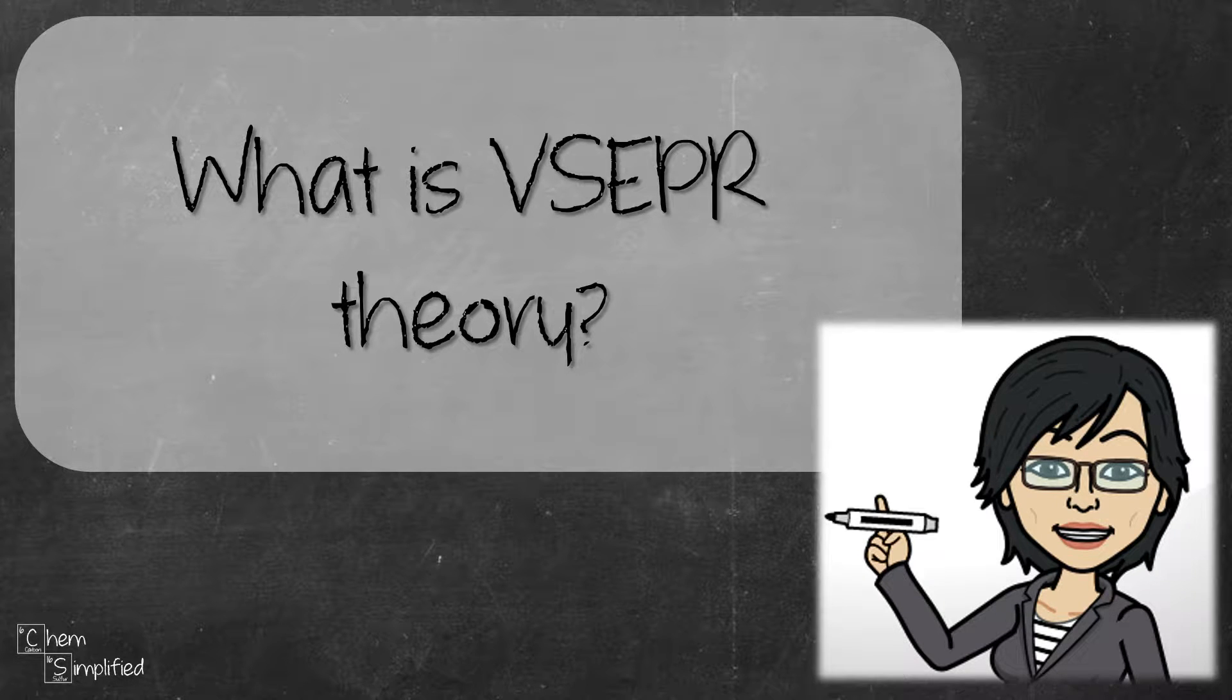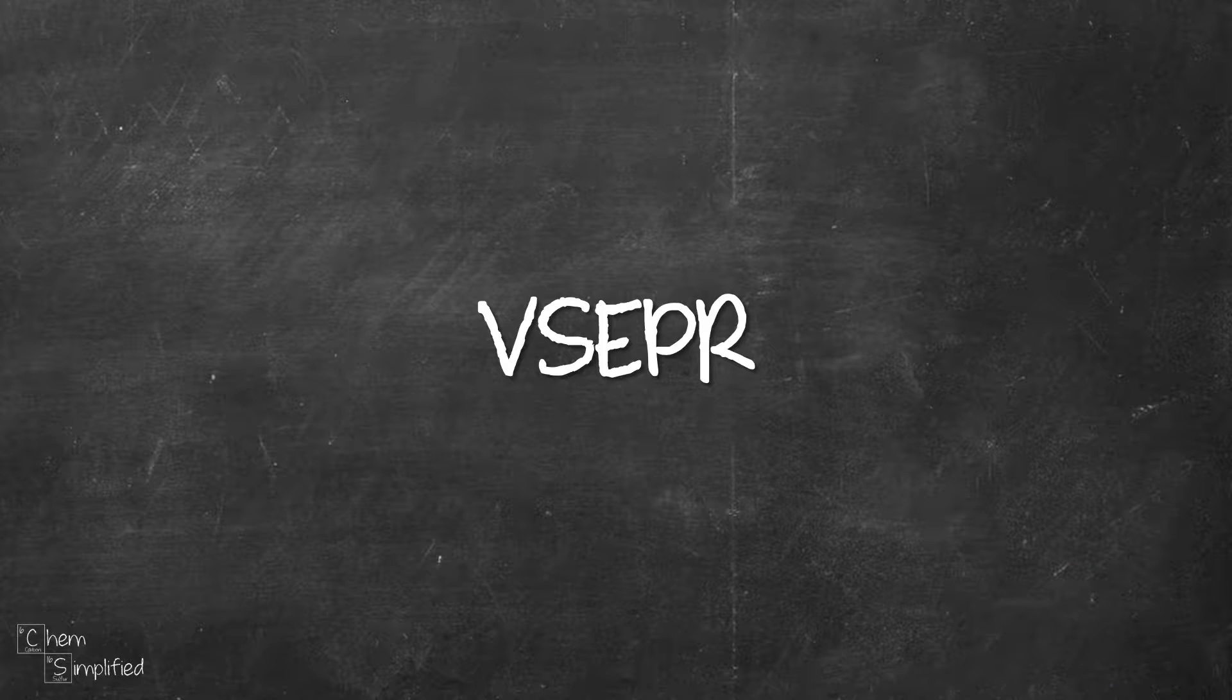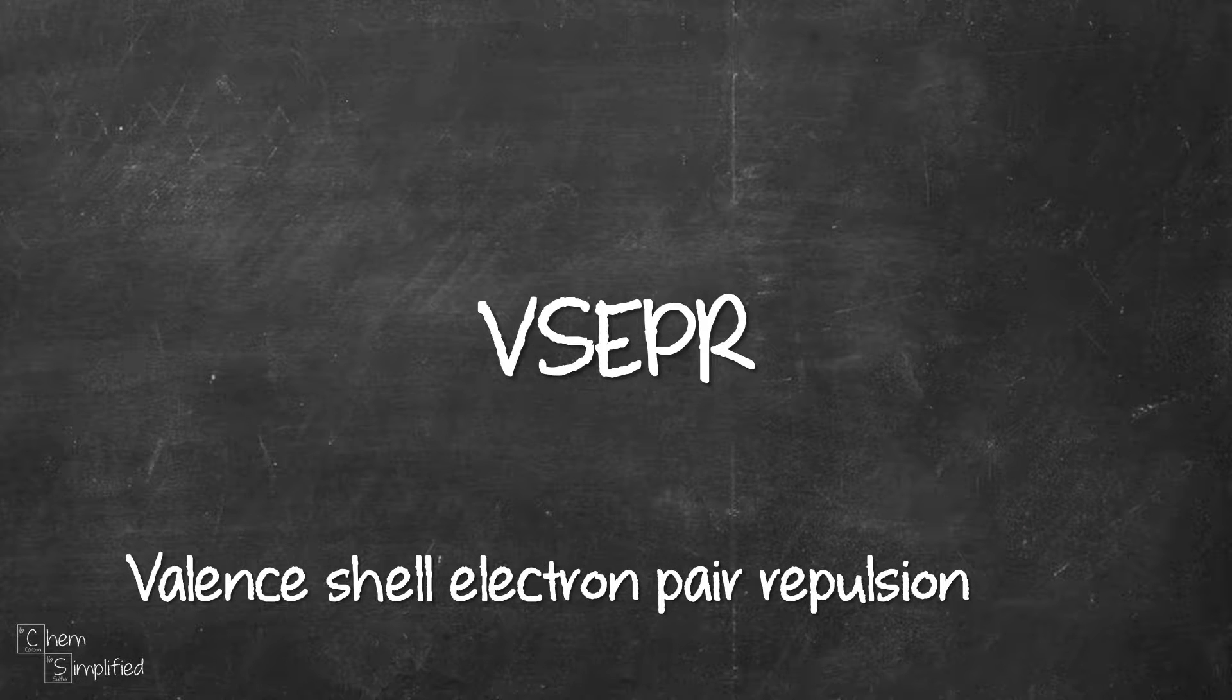We're going to answer the question: what is VSEPR theory in this video? VSEPR is short for valence shell electron pair repulsion. This theory predicts the geometry of molecules based on the number of electron pairs that surround the central atoms.